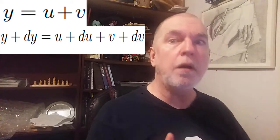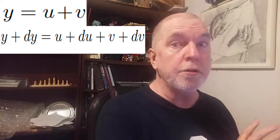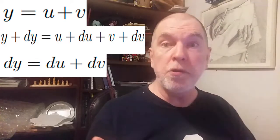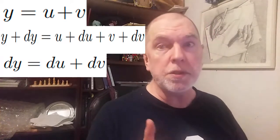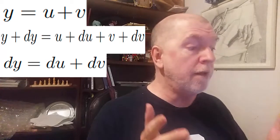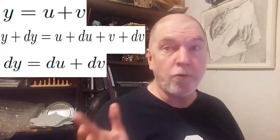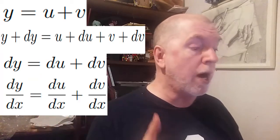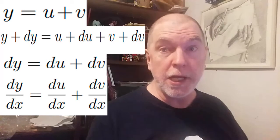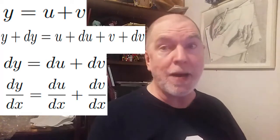As before, subtract the original function, the y from the left and the u plus v from the right. We end up with dy equals du plus dv. Divide through by dx, and there you have what we were looking for.